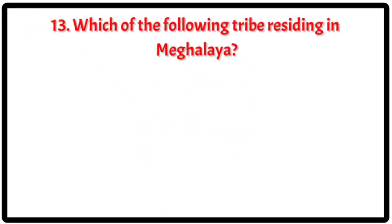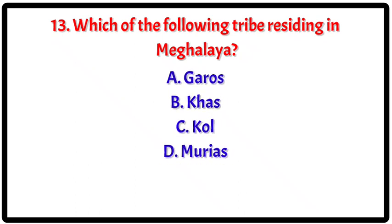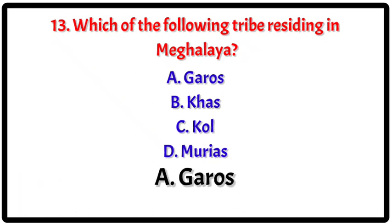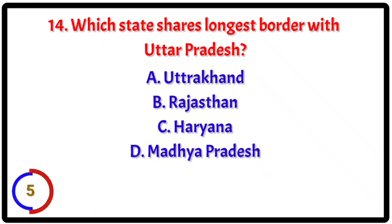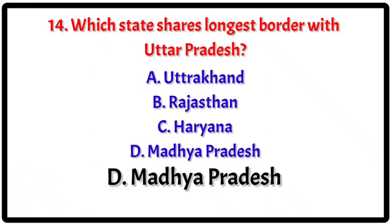Question 13: Which of the following tribes reside in Meghalaya? Your options. The correct answer is A — Garos. Question 14: Which state shares the longest border with Uttar Pradesh? Your options. The correct answer is D — Madhya Pradesh.